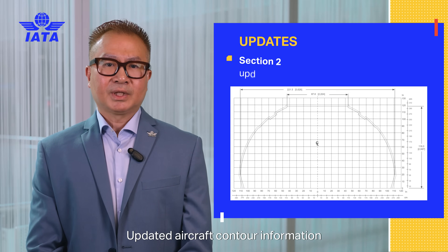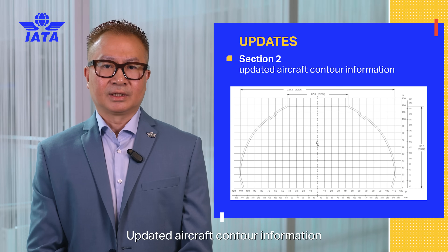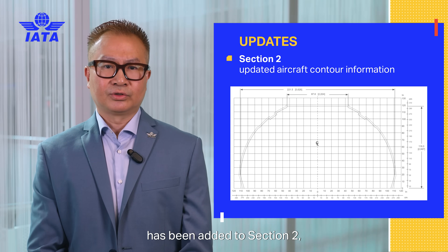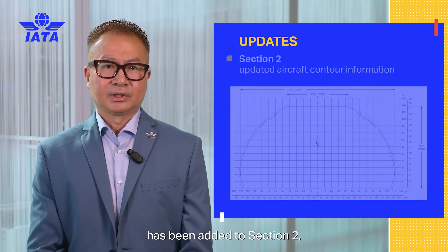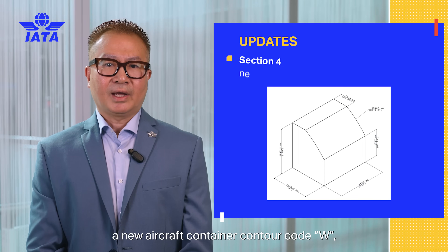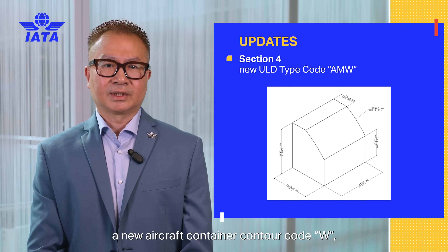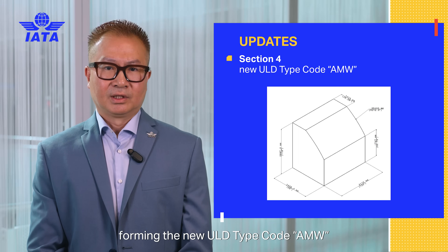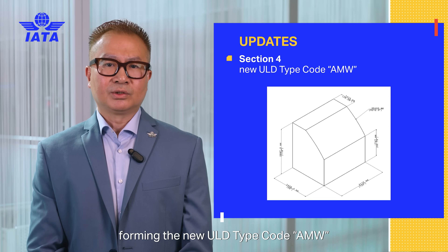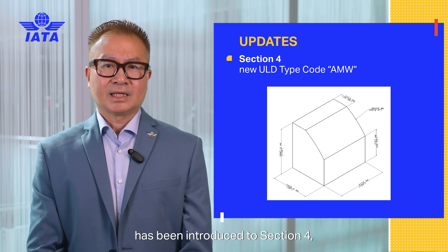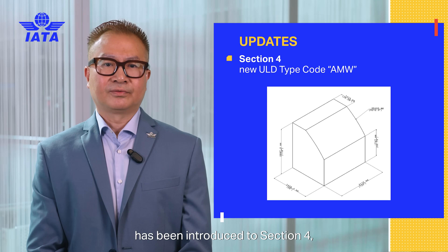Updated aircraft contour information has been added to Section 2. A new aircraft container contour code W, forming the new ULD type code AMW, has been introduced to Section 4.